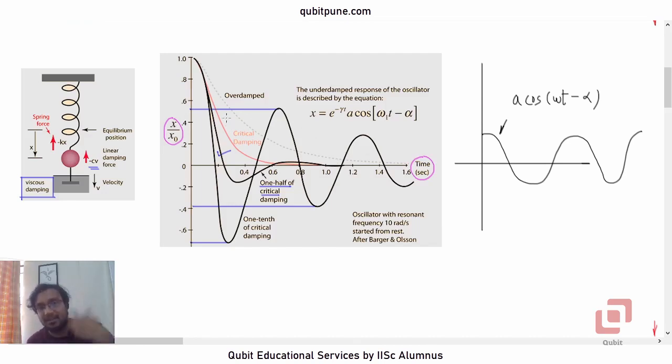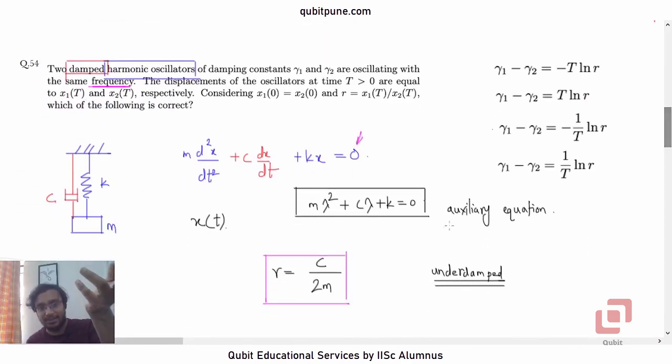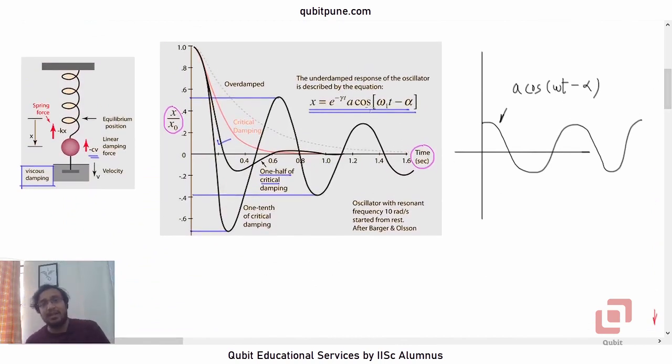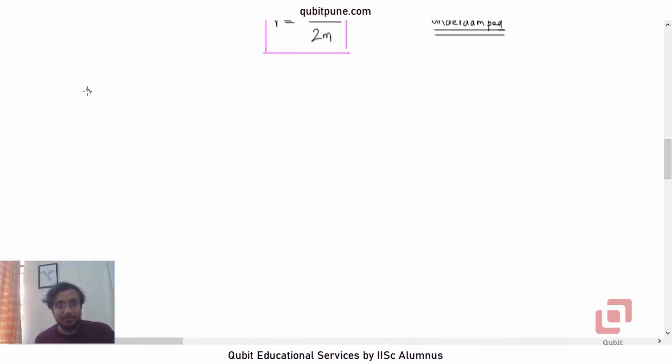So we are going to start the solution by picking up this ready-made solution. We are not going to solve the differential equation. But if you do it, you will need the roots of this. And then you will get something like this: e^(-γt) · a·cos(ωt - α). So let us start with x₁. x₁(t) will be equal to e^(-γ₁t) · a·cos(ωt - α).